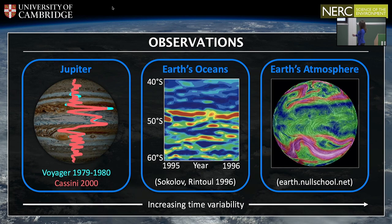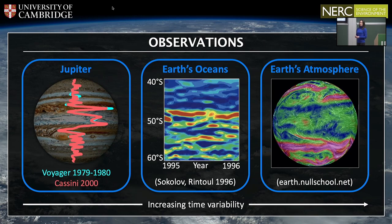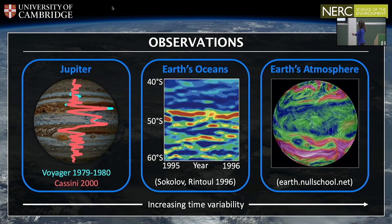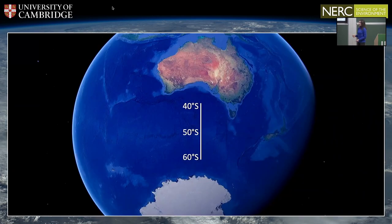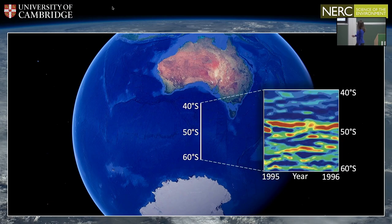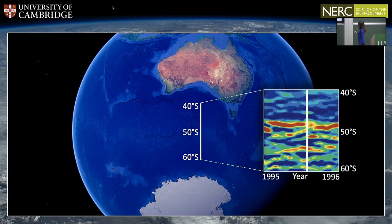In the Earth's oceans, the jets are observed to vary over timescales of the order of months. This figure shows the variability of jets — or rather sea surface height anomalies — in the Southern Ocean. The authors considered a single line of longitude between South Australia and Antarctica and plotted the time variability of these jets. You can see two jets starting to move towards each other and merging to form a single jet, and then a new jet forming further south.